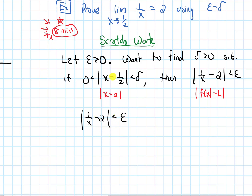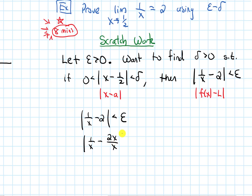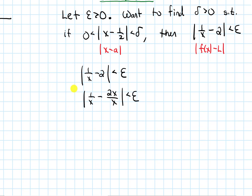It almost looks like I could reciprocal this to make it x minus a half, but unfortunately that doesn't work when there are two terms. So let's simplify: I have |1/x − 2|, let's get a common denominator — |1/x − 2x/x| < epsilon — so |(1 − 2x)/x| < epsilon.